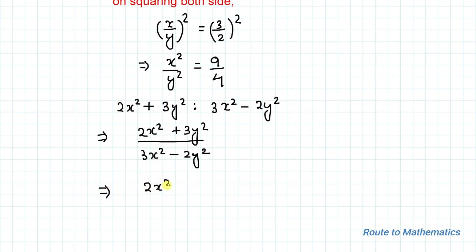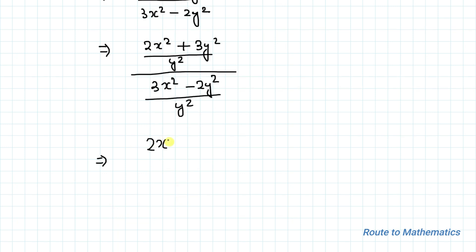So by dividing, we will get 2x square plus 3y square divided by y square divided by 3x square minus 2y square divided by y square. So we will get 2x square divided by y square plus 3y square divided by y square divided by similarly in the denominator 3x square divided by y square minus 2y square divided by y square.